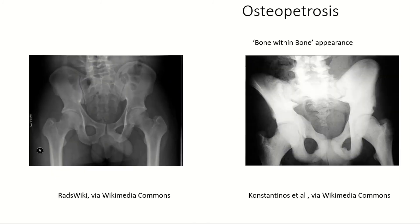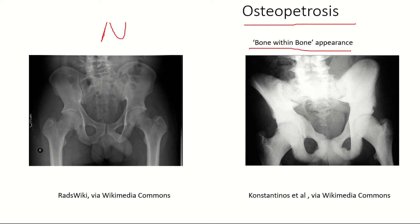In this slide I've compared two X-rays. On the left is a normal X-ray of the pelvic bone, and on the right is an X-ray from a patient with osteopetrosis. The bones appear way too bright due to excess bone deposition. This appearance is sometimes termed 'bone within bone' appearance.